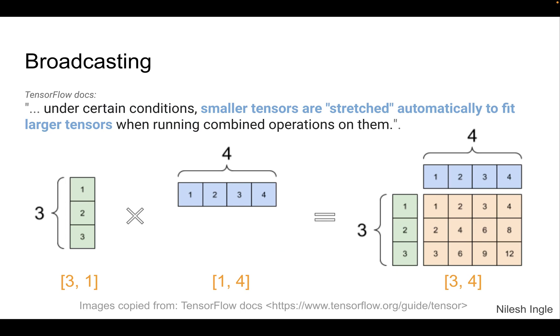Now shifting to broadcasting, you've probably seen this when working with NumPy, and it is a similar method here. Let's say we have these two tensors, three and four. And if we are trying to get a product of these two, then we get a final matrix of three by four.